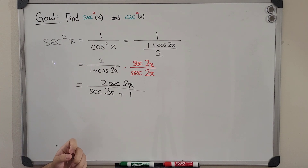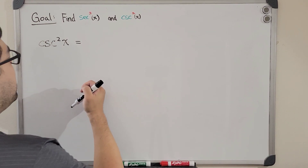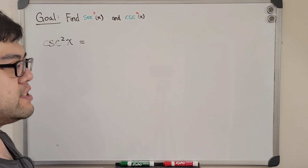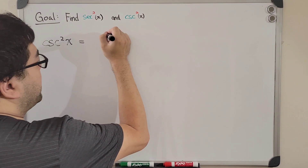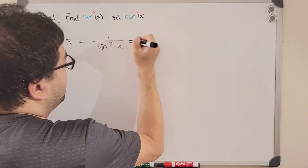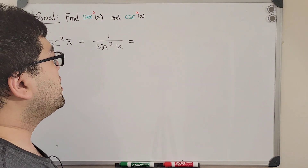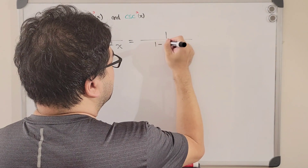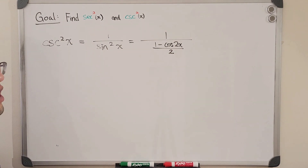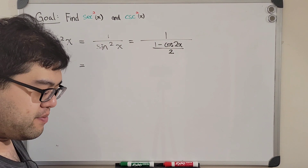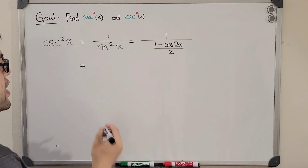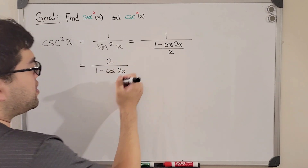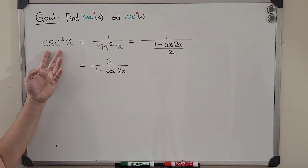Now for the last expression: cosecant squared of x. Using the same logic, cosecant is the reciprocal of sine, so we rewrite this as 1 over sine squared of x. We apply the half-angle formula for sine squared: sin²x = (1 − cos(2x)) / 2. With this in the denominator we again have a complex fraction, which we flip to get 2 / (1 − cos(2x)).